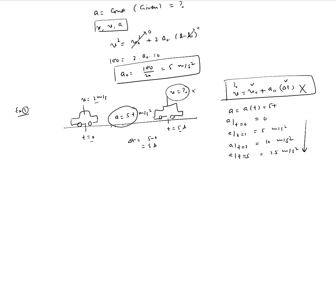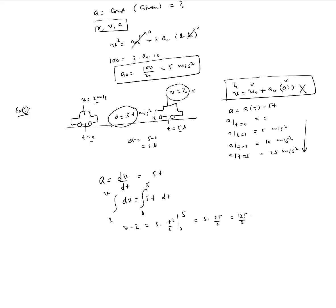Instead, go back to the original definition: a = dv/dt, which is always valid. With a = 5t, bring dt to one side and integrate: velocity goes from 2 to v, and time from 0 to 5. This gives v − 2 = 5t²/2 evaluated from 0 to 5, which equals 5·25/2 = 125/2 = 62.5. So v = 2 + 62.5 = 64.5 meters per second.